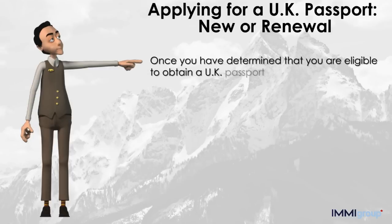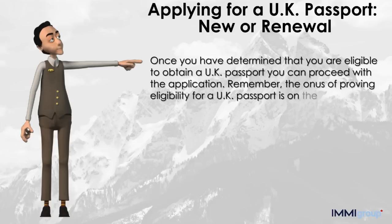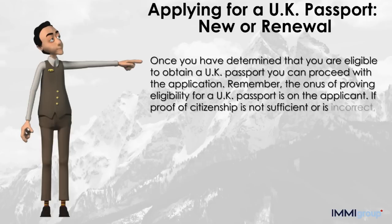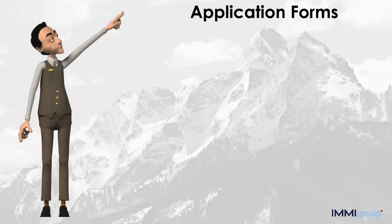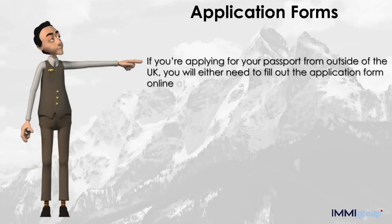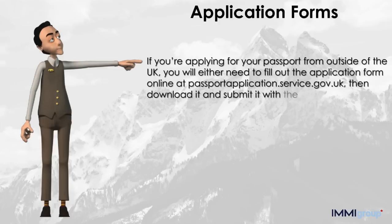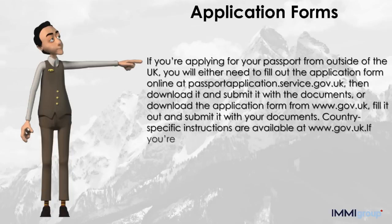Once you have determined that you are eligible to obtain a UK passport, you can proceed with the application. The onus of proving eligibility is on the applicant. If proof of citizenship is not sufficient or is incorrect, the application will be denied. If you are renewing your UK passport, you will submit the same forms and follow the same procedure. If applying from outside the UK, you can fill out the application form online at passport.application.service.gov.uk, or download the form from www.gov.uk, fill it out, and submit it with your documents.